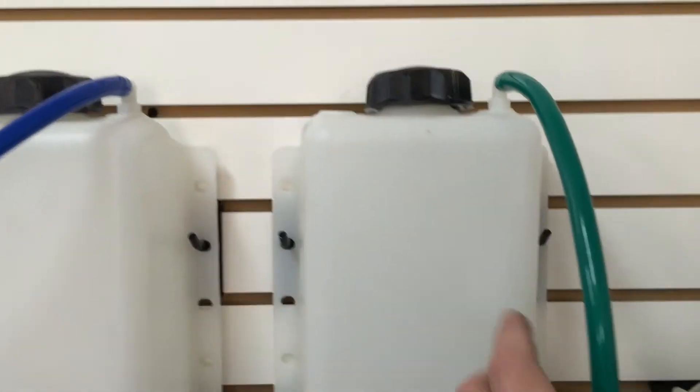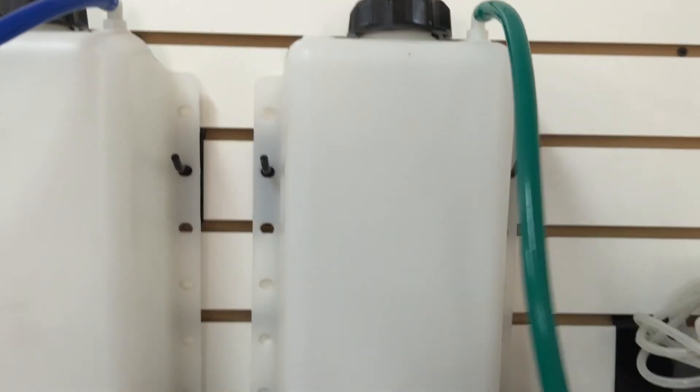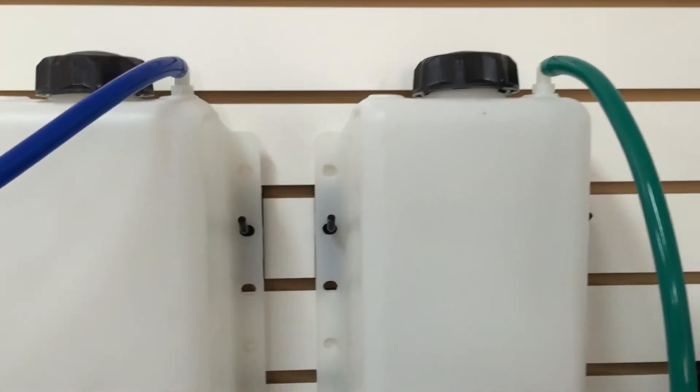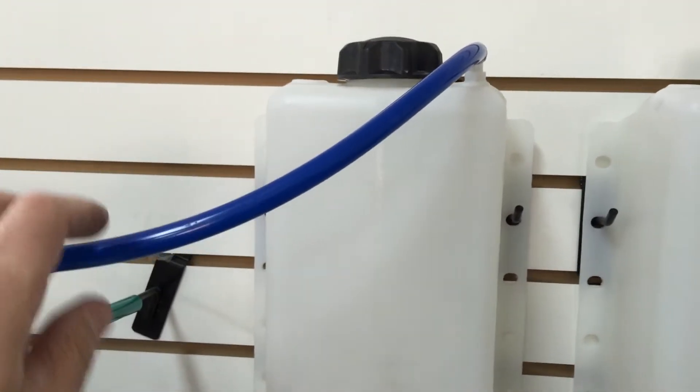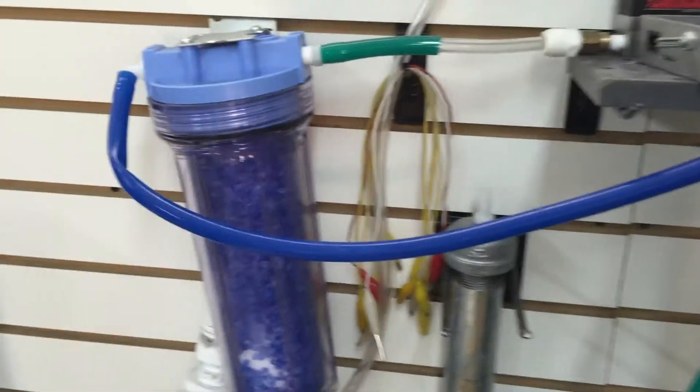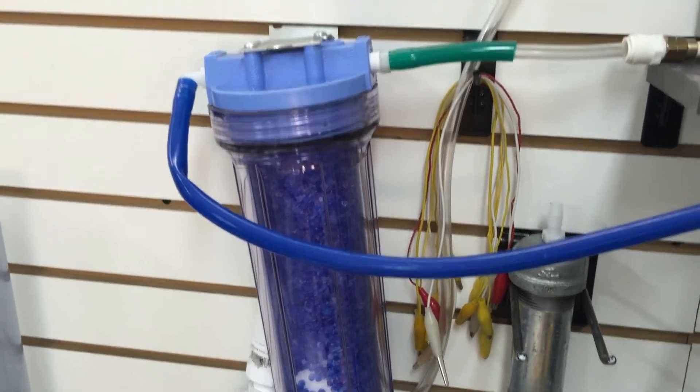And the oxygen flows out and we're just venting it off into the air. And we've got the hydrogen going off into a dryer. This is a desiccant dryer, so it's taking all the moisture out. And then from the dryer goes into my Alley Cat.